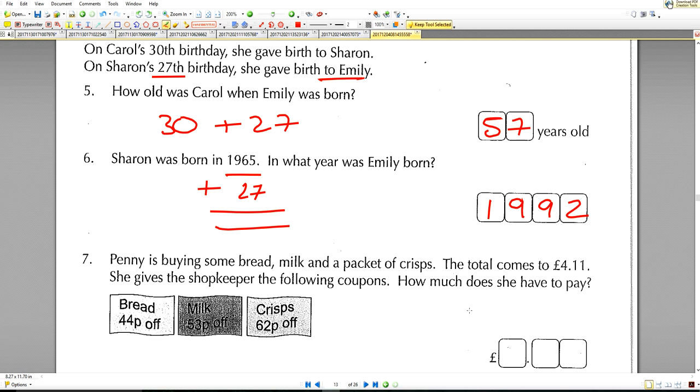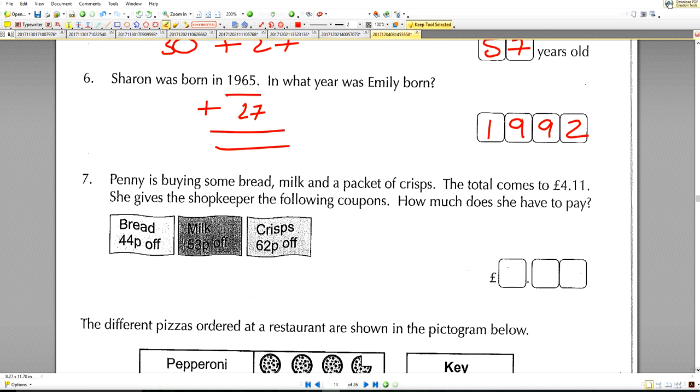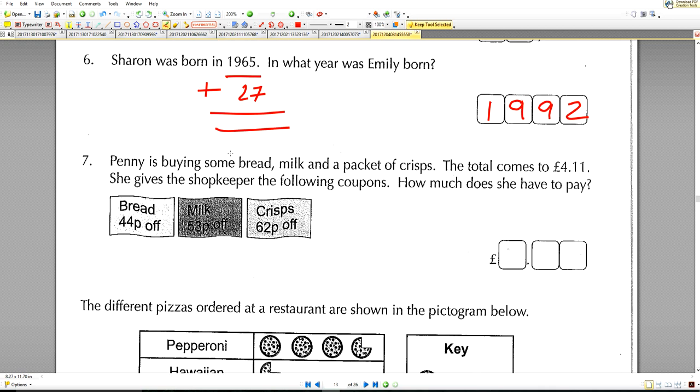Penny is buying some bread, milk, and a packet of crisps. The total comes to £4.11. She gives the shopkeeper the following coupons. How much does she have to pay? She's saving 44p on the bread, 53p on the milk, and 62p on the crisps. Let's add up her savings: 4 and 3 is 7, 7 and 2 is 9, 4 and 5 is 9, 9 and 6 is 15. She's saving £1.59. So we have £4.11 minus her savings. When we work that out, that gives us an answer of £2.52.